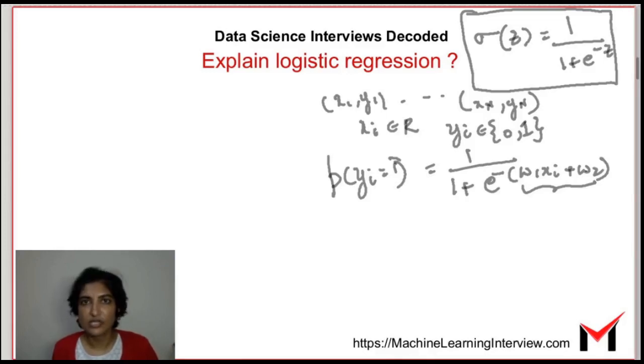There is only one feature because we are talking about the univariate case but when we have multiple features we can just expand this to w1 x1 plus w2 x2 and so on where x1, x2 are the individual components of the particular data point.